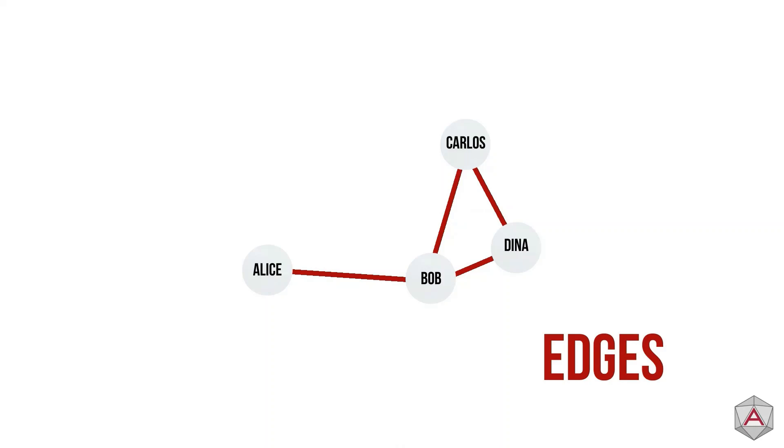The lines on the graph are called edges. These represent the links between the nodes. In our example, this is the friendship, but just like nodes, they can represent anything.